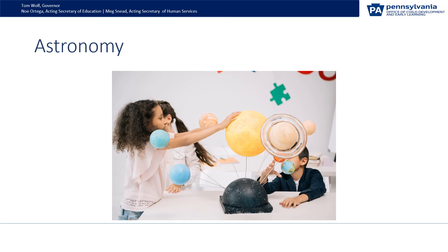You can also include shadows, like tracing outside with chalk or inside on paper. Trace different things — people, toys, etc. Discuss what an astronaut is and does, and include materials and dramatic play that refer to this occupation.